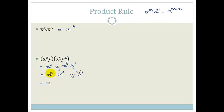And then that's x to the 2 plus 3 is 5. And then y to the, remember, this is implied one there. So it's y to the 5.